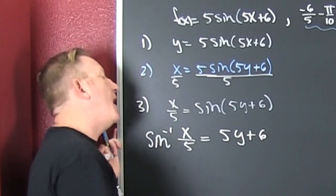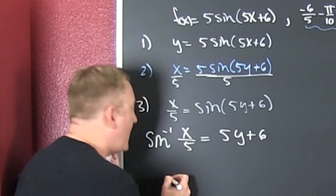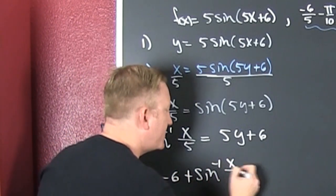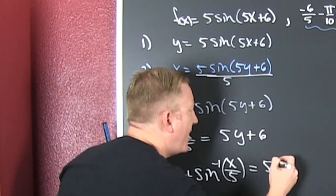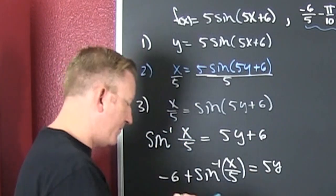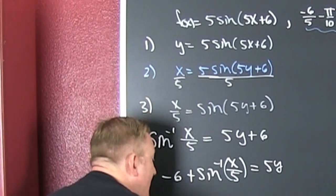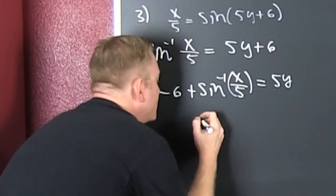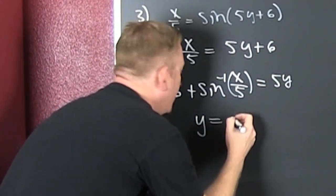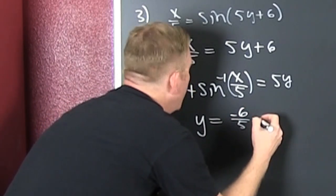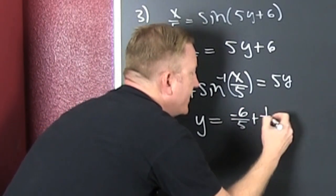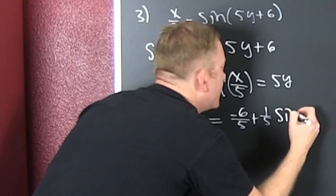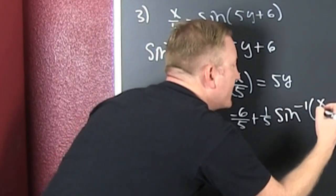I subtract off that 6 and I have sine inverse of x over 5, minus 6, equals 5y. Then I divide both sides by 5. So y equals negative six-fifths plus one-fifth times the sine inverse of x over 5.